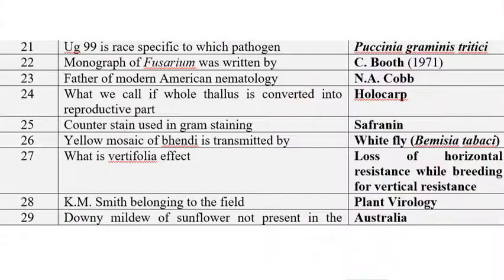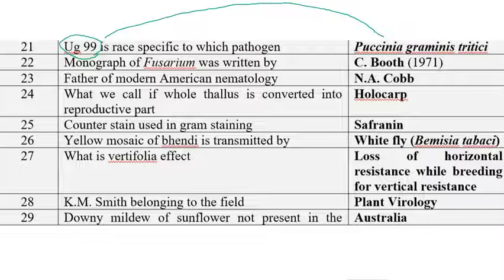UG-99 is a specific race of wheat stem rust — Puccinia graminis tritici. It was initially discovered in Uganda in the year 1999, hence the name UG-99. In India, this race was first reported in New Delhi in the year 2008.